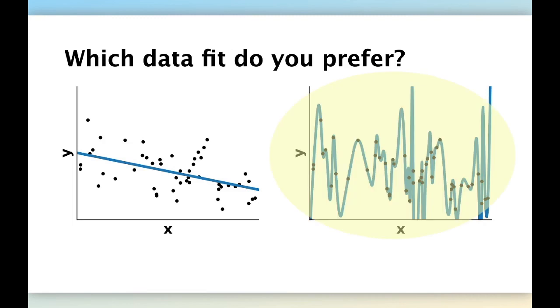On the right hand side, we fit a polynomial with a large number of degrees, a large degree polynomial. This polynomial can go through all the individual black data points of the training set. So basically this polynomial, the blue prediction function here, can exactly predict the value of the black data points without any error.